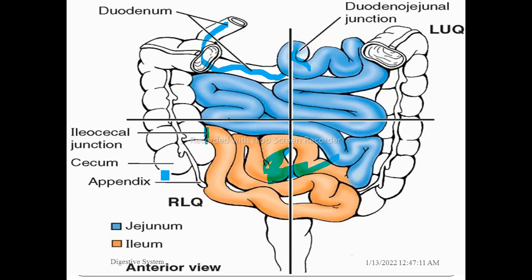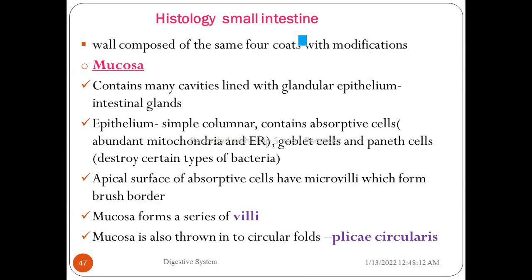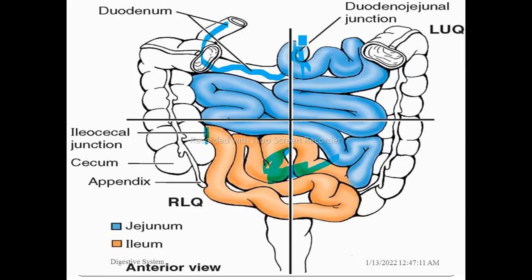This picture gives a clear distinction between the three parts of the small intestine. The blue structure is the duodenum, the pink one is the jejunum, and the remaining section is the ileum. The two key junctions visible are the ileocecal junction and the duodenojejunal junction.